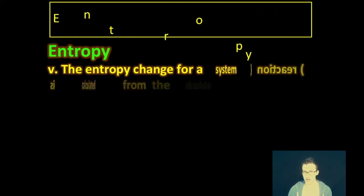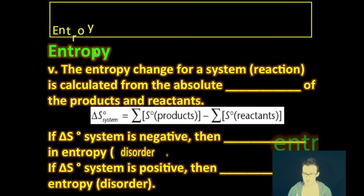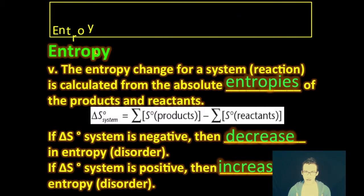The fifth thing to keep in mind about entropy is that the entropy change for a system or a reaction is calculated from the absolute entropies of the products and reactants. Hopefully, this formula looks familiar. It's exactly the same as the change in enthalpy is calculated. It's the entropy of your products minus the sum of the entropy of your reactants. Keep in mind if your delta S is negative, then that implies a decrease in entropy or a decrease in disorder, which is not favored. Again, the universe favors disorder, favors crazy, favors chaos. So, we're looking for positive delta S's that indicate an increase of entropy, an increase of disorder.